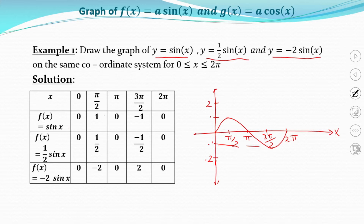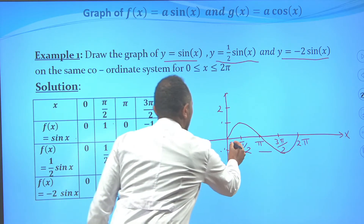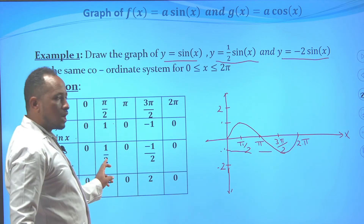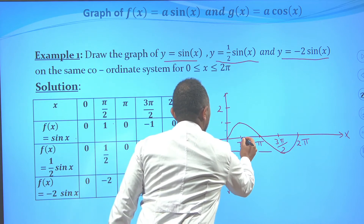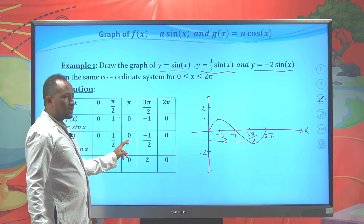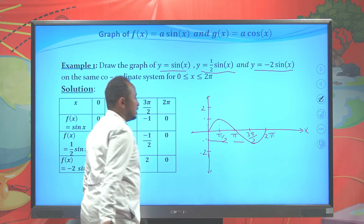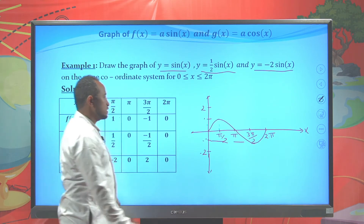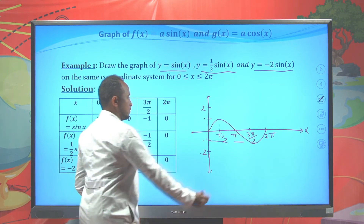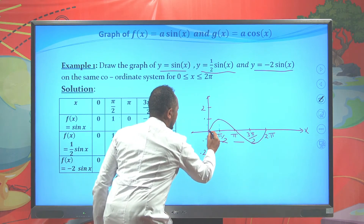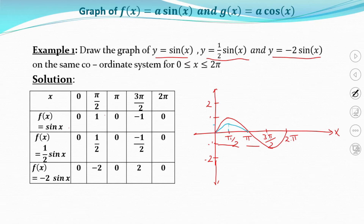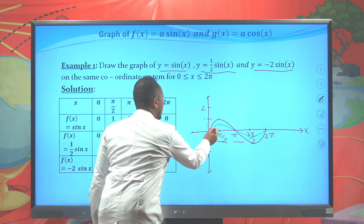This is the graph of f(x) = sin(x). Now to draw f(x) = ½sin(x): at x=0, the value is 0; at π/2, it is ½; at π, it is 0; at 3π/2, it is -½; and at 2π, it is 0. Connecting these points gives the graph of f(x) = ½sin(x), which has a smaller amplitude than sin(x).